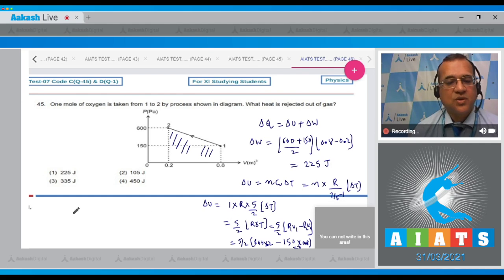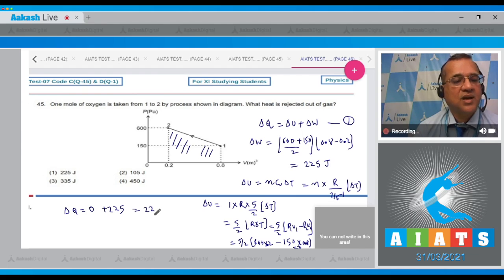So ΔU is equal to 0, and ΔW you have calculated as 225. So the total heat rejected is 225 joules.